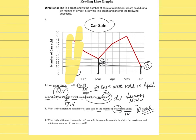Probably because around this time of year many people receive their income tax refund — but the graph is not giving you that information, so you don't have to draw that conclusion. Question four: what is the difference in number of cars sold between the month with the maximum and the month with the minimum number of cars sold?